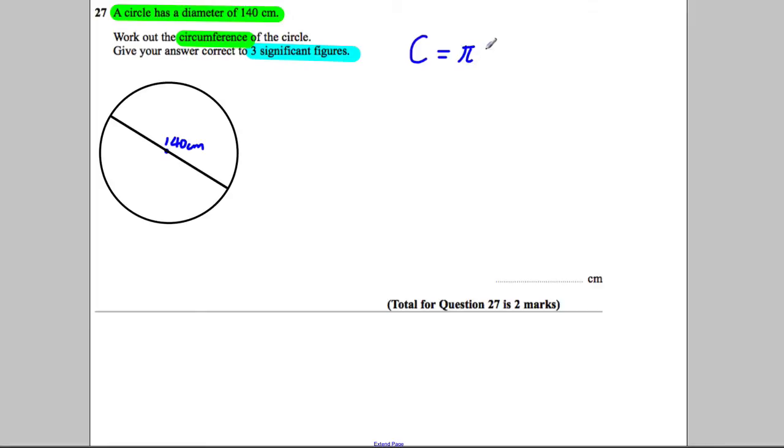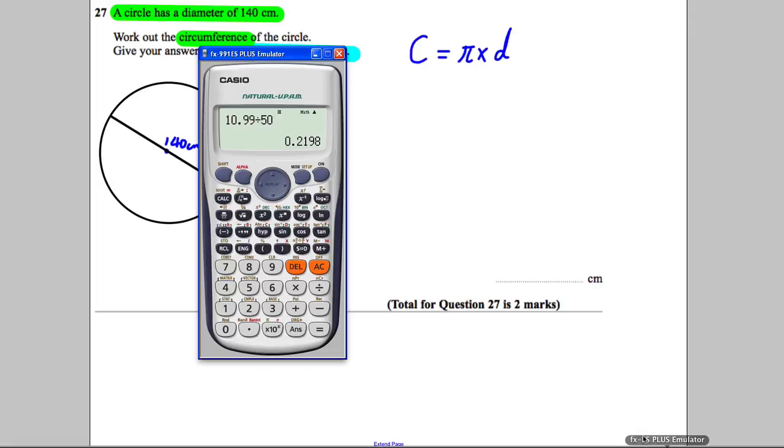Pi is a button on our calculator. Shift pi. It's equal to 3.141592654 and goes on forever.